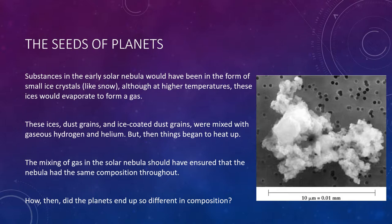We now know that we have this disk of hot material with a star forming at the center. So how exactly do we get the planets, and why do we get them the way we see them today? That will be the remainder of this lesson. To understand how planets, asteroids, and comets formed, we start by considering a cold, low-pressure solar nebula before it was warmed by the emerging protosun.